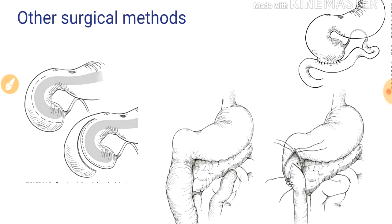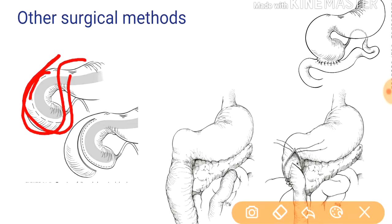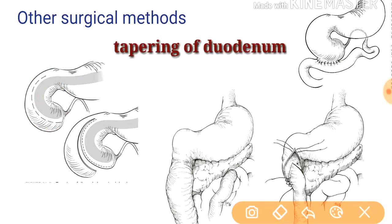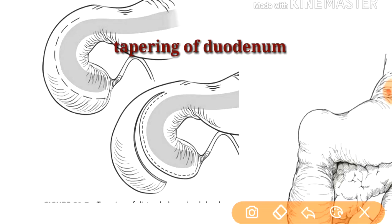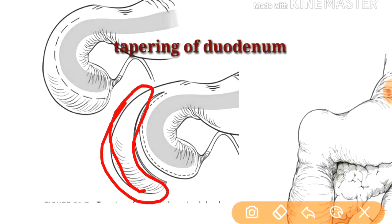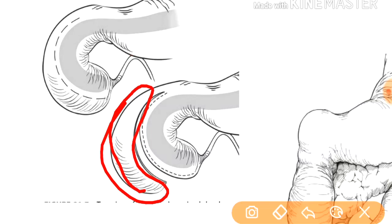In duodenal atresia, not only is there an anatomical problem, but also a functional component that results in dilatation of the proximal duodenum. This proximal atony can cause postoperative obstruction even after anastomosis. In such cases, a tapering duodenoplasty can be considered: an incision is placed on the anterior surface of the duodenum, the ampulla of Vater is identified, a portion of the dilated duodenum is excised making sure the bile duct and pancreatic duct are not injured, and the remaining duodenum is resutured over a dilator to taper it and prevent postoperative atony.